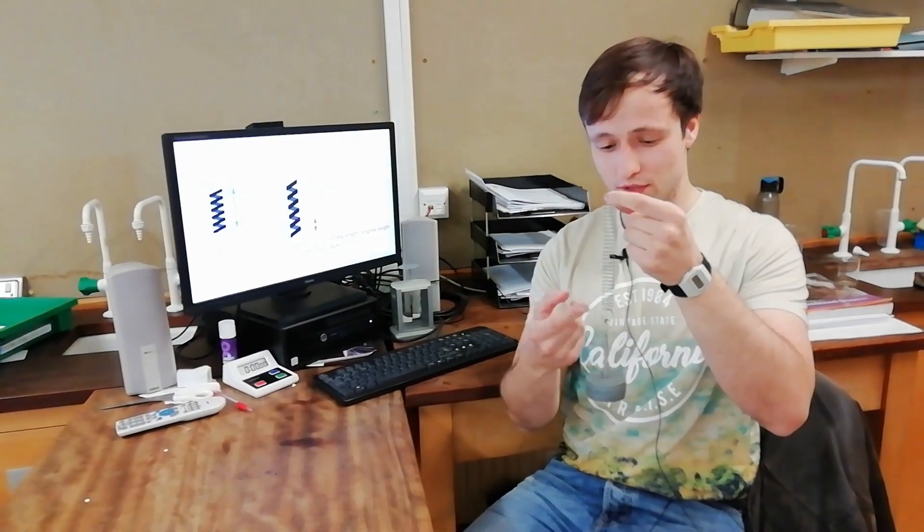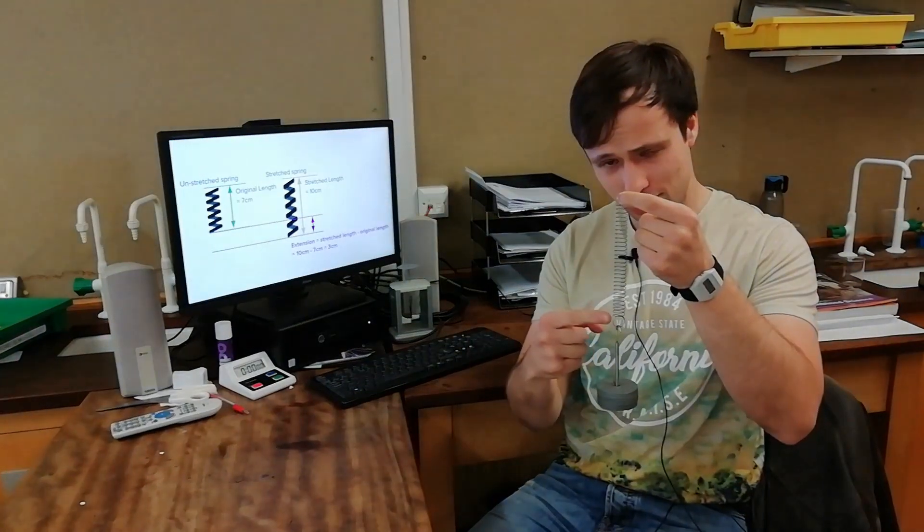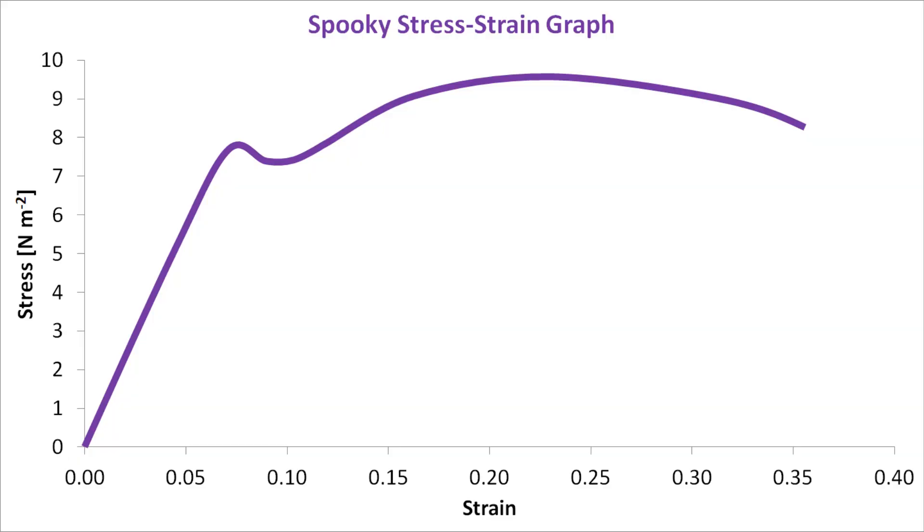This is because the spring is providing a force equal and opposite to the weight that's extending it. Which means that if I know the weight that's pulling on the spring, I know the force that the spring's pulling back with. This is why we plot a force against extension graph and not the other way around. Because in materials testing, it's useful to know how much of a fight a material's putting up when it's extended different amounts.